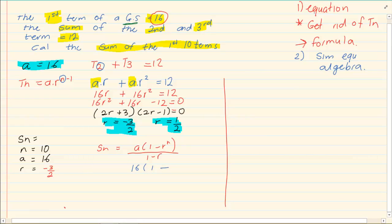So we have 16 open brackets one minus, and then our r for this one we're going to take minus three over two.